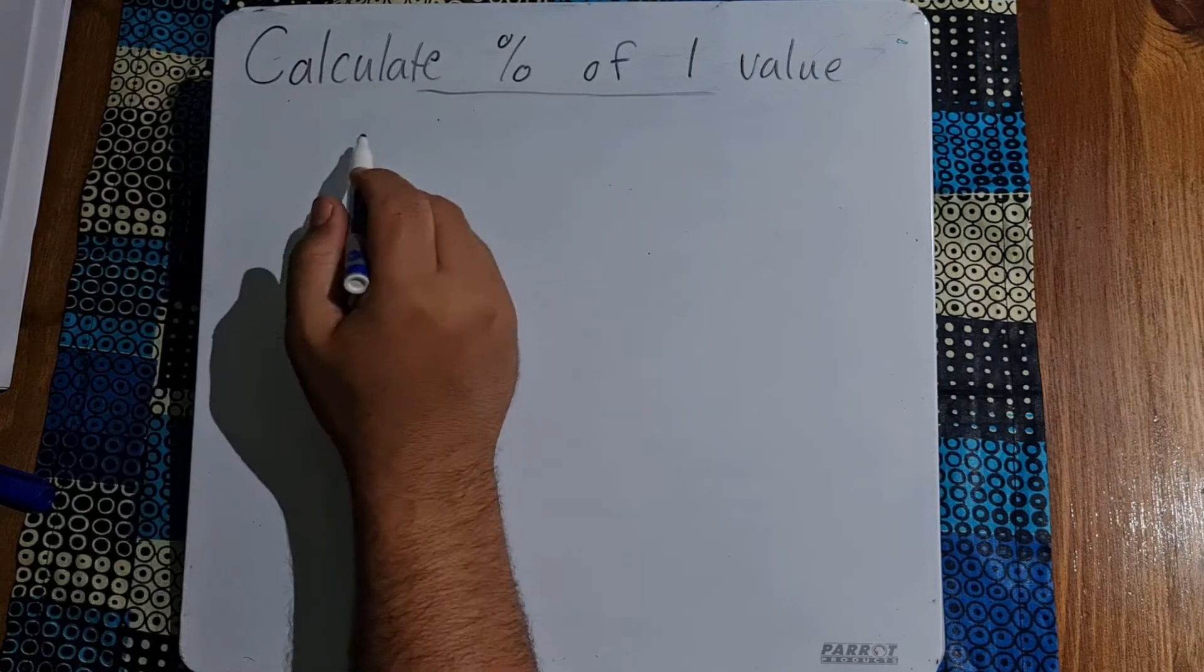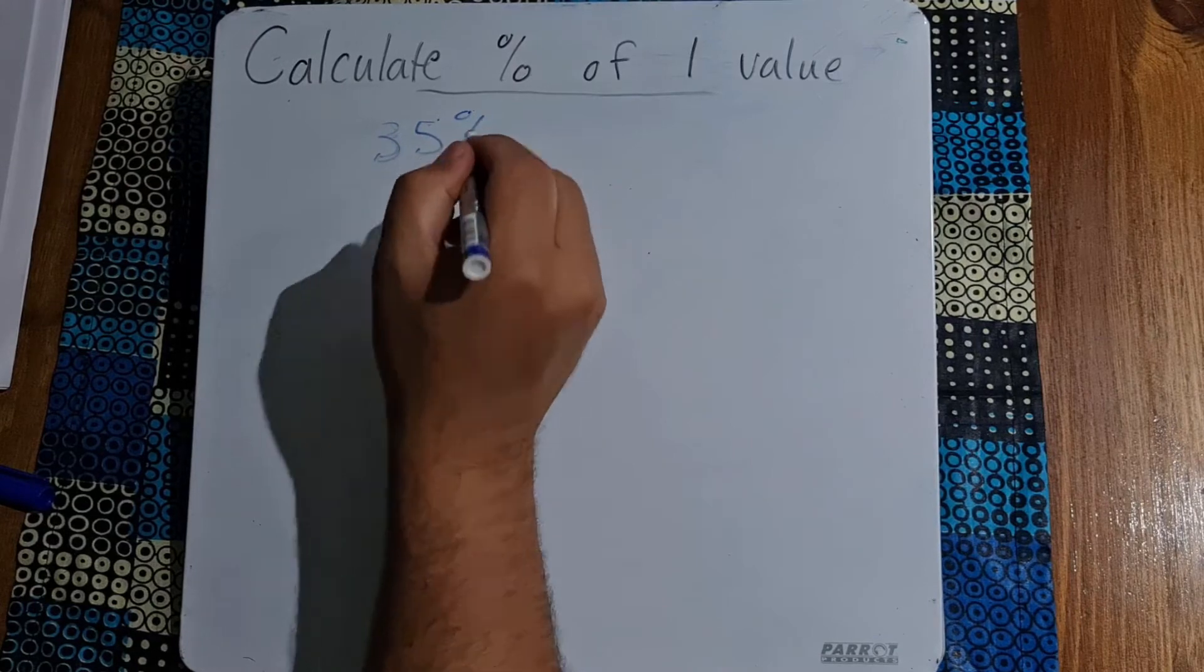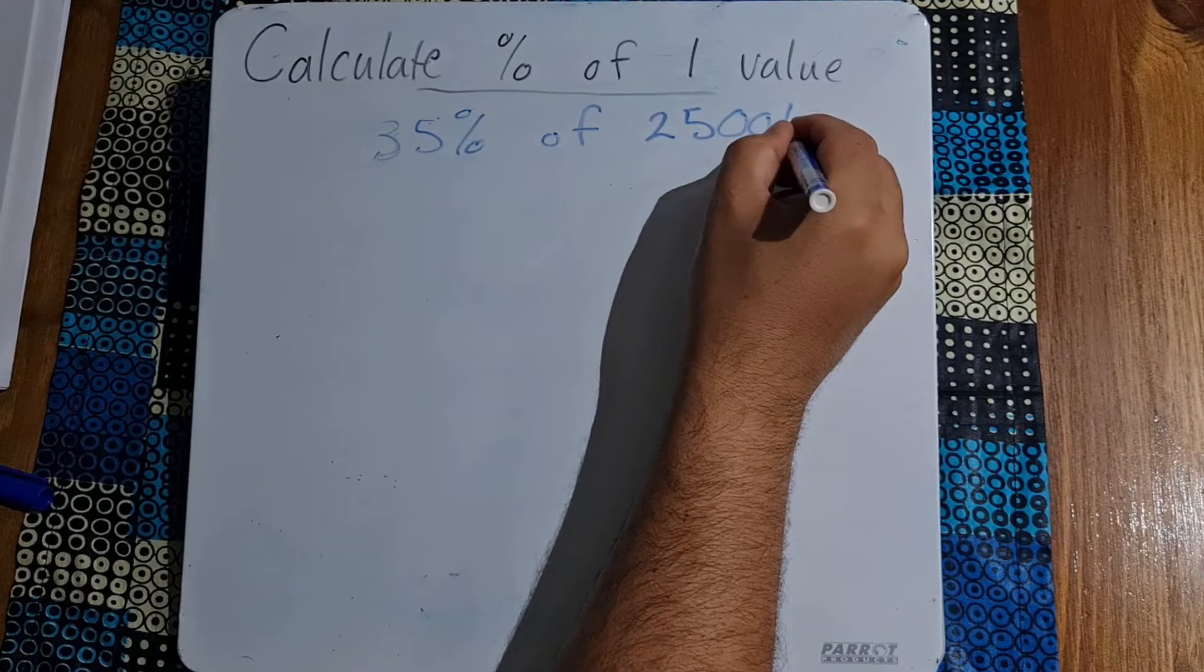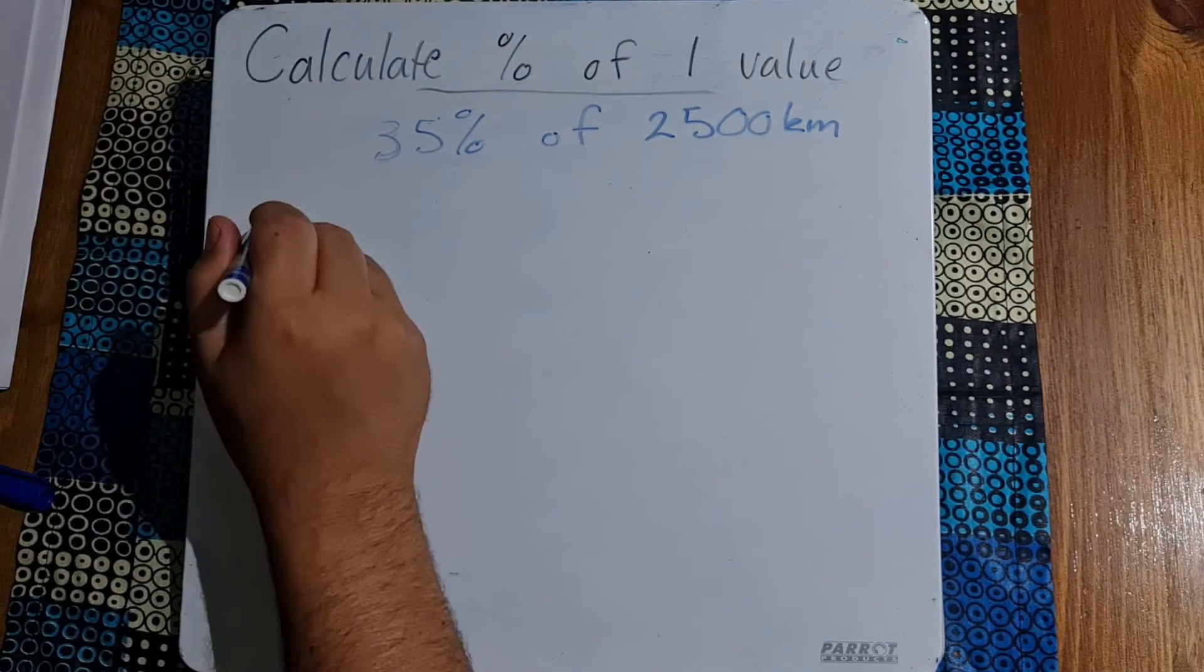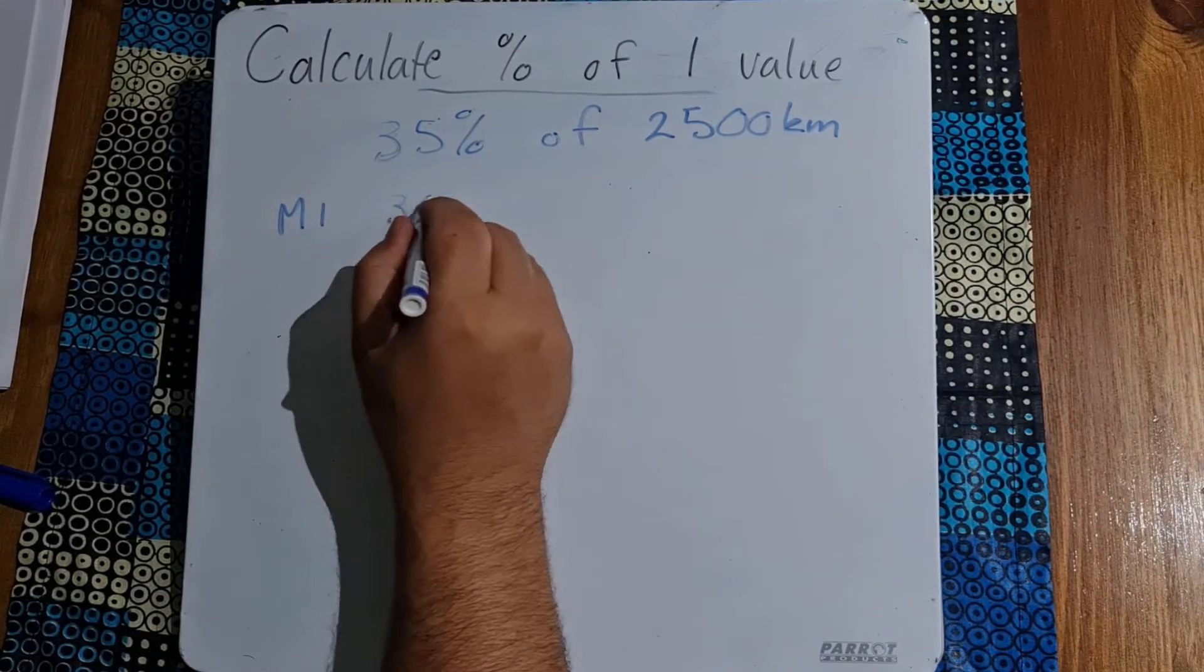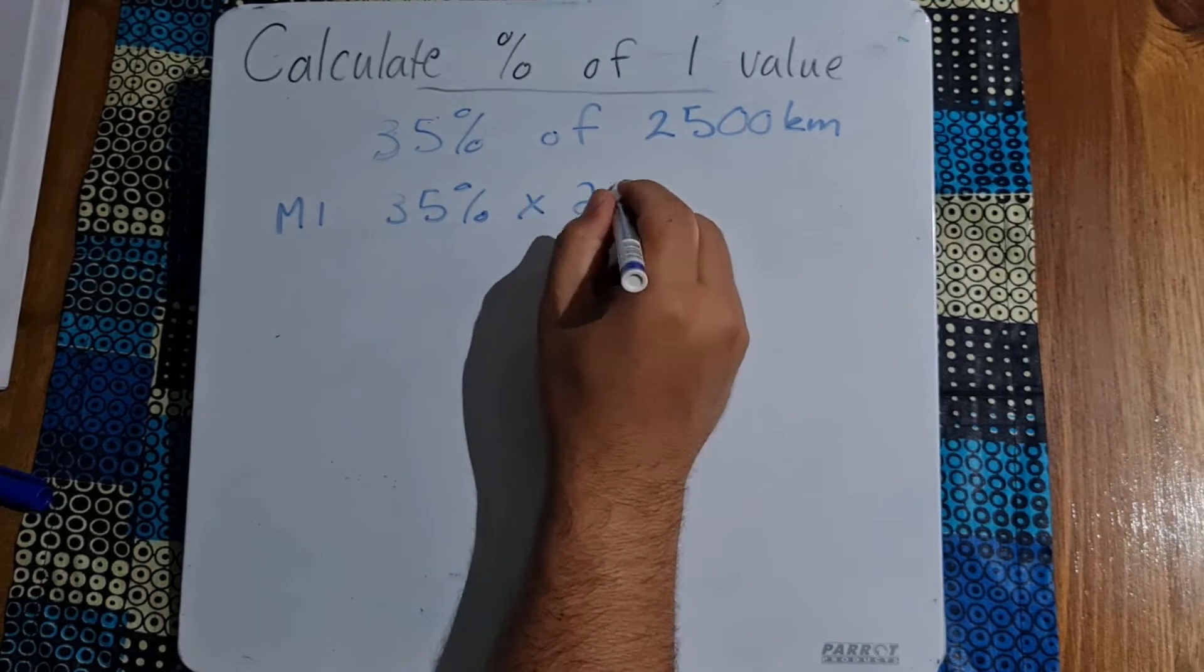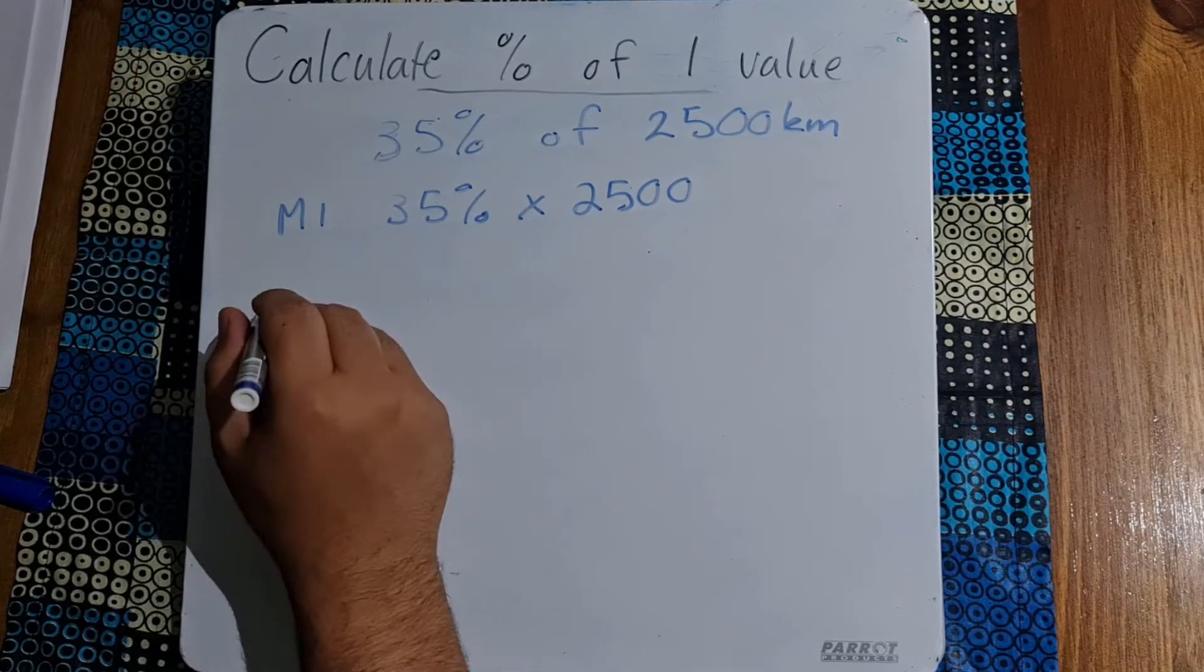For example, they tell us to calculate 35 percent of 2500 kilometers. Now there are three ways of doing this. Method number one would be simply to say 35 percent and multiply that by 2500, and that's how we'll get our first answer.